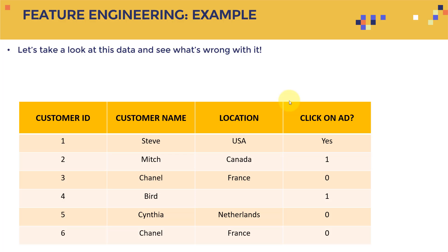Let's take a look at a feature engineering example. Assume we have this data with columns: Customer ID, Customer Name, Location, and the output or target — whether a customer clicked on an ad or not. For example, imagine you're a company that posted an ad on Facebook and collected data about your customers. If the customer clicks the ad, that's a one; if they did not, that's a zero.